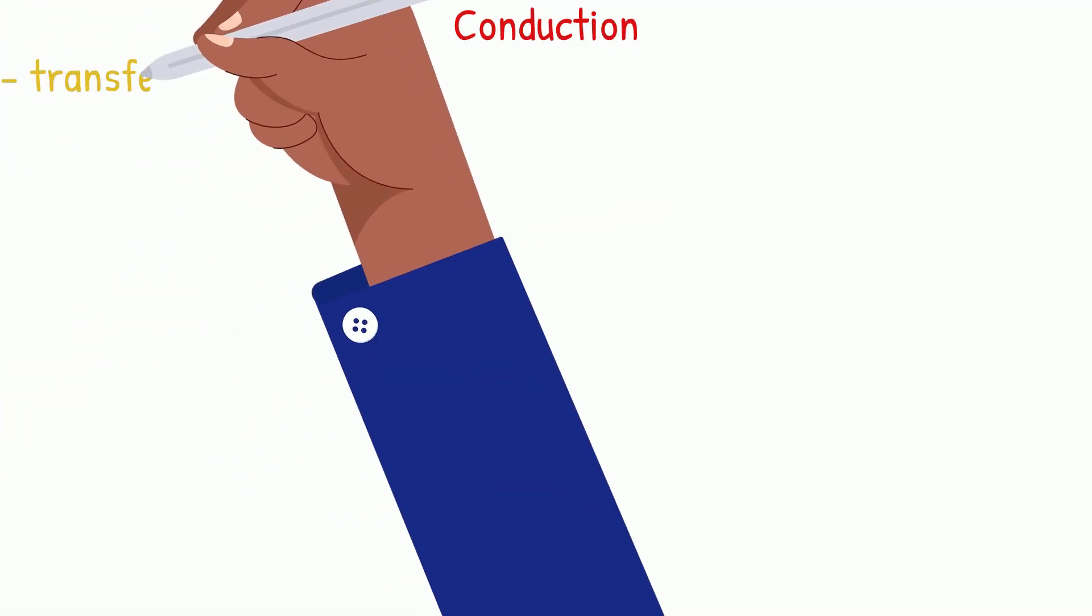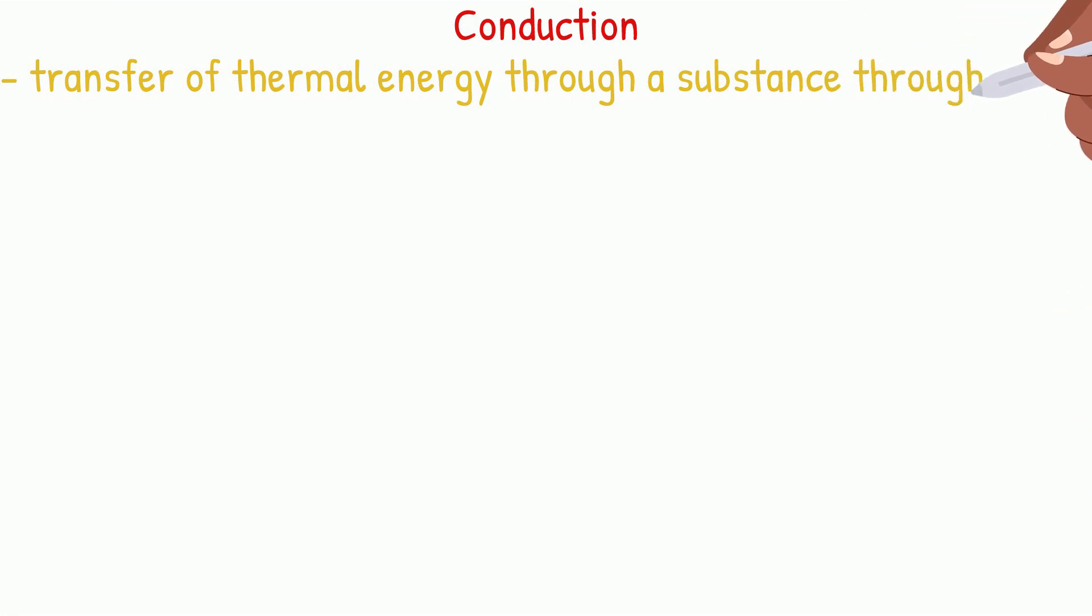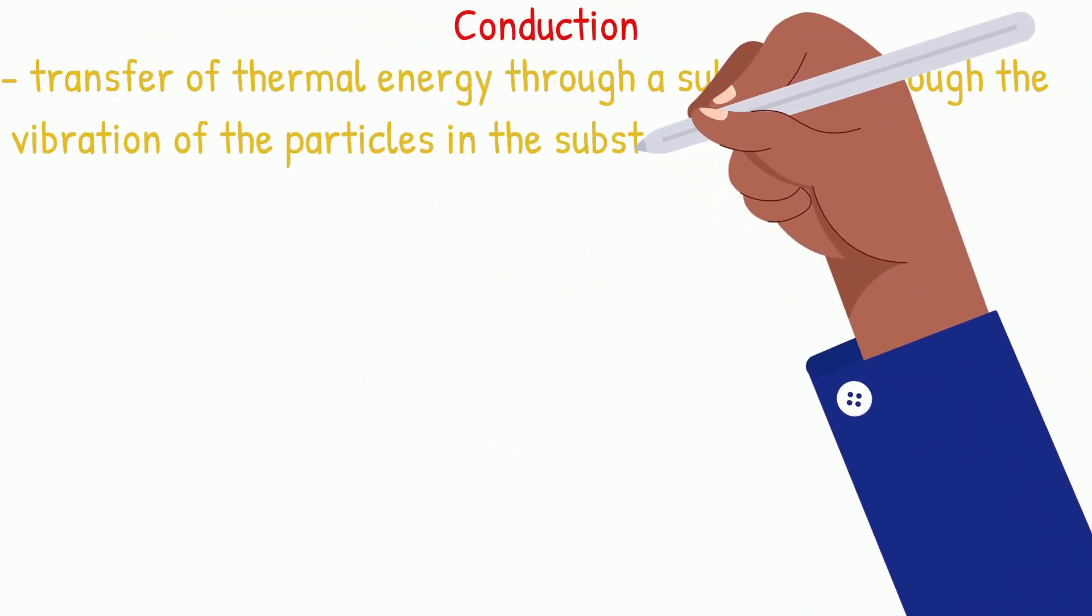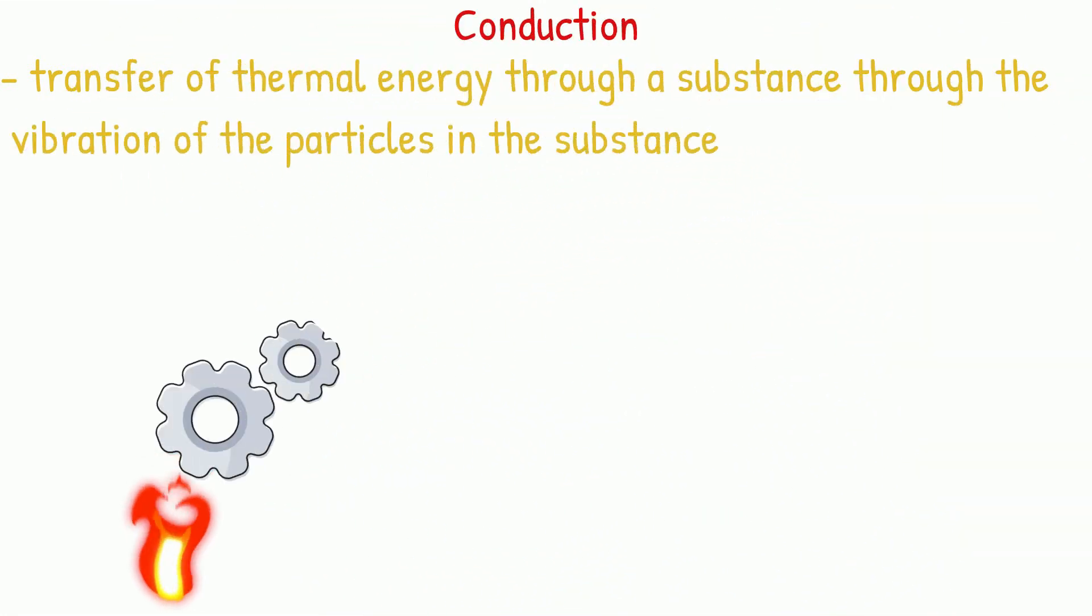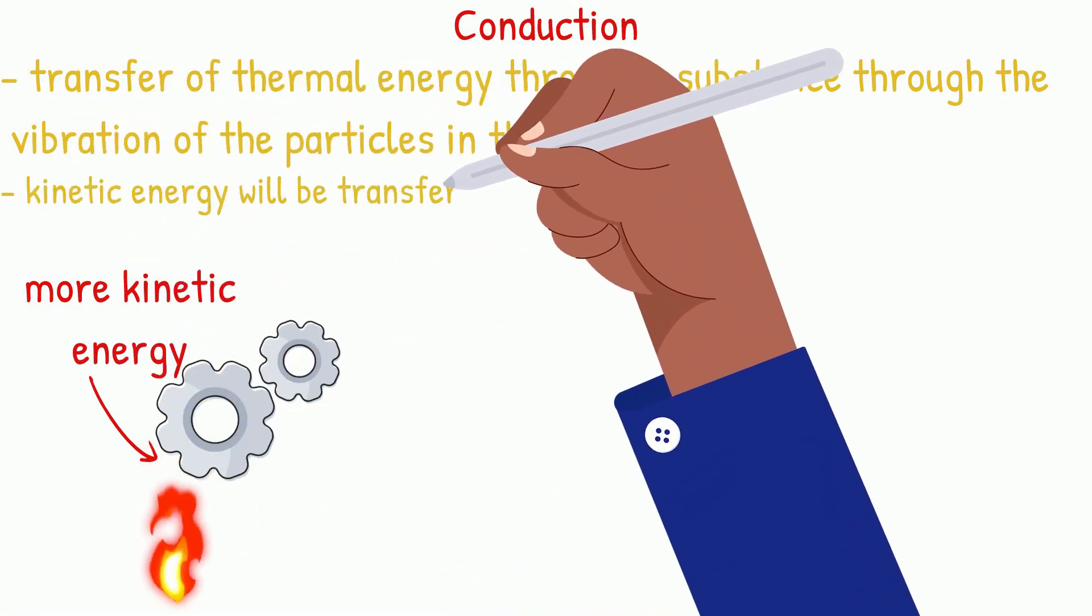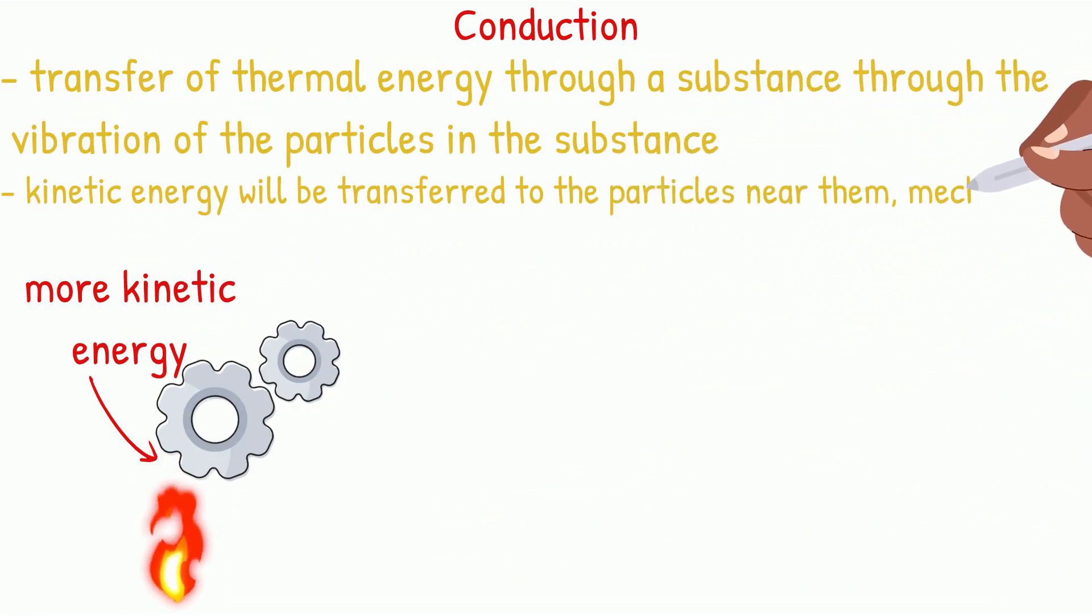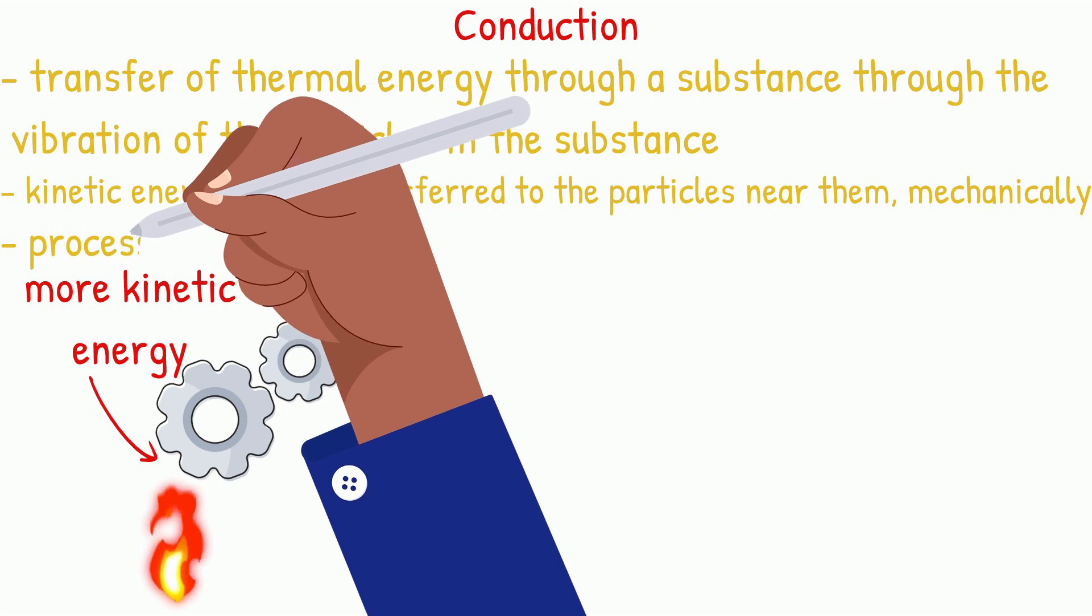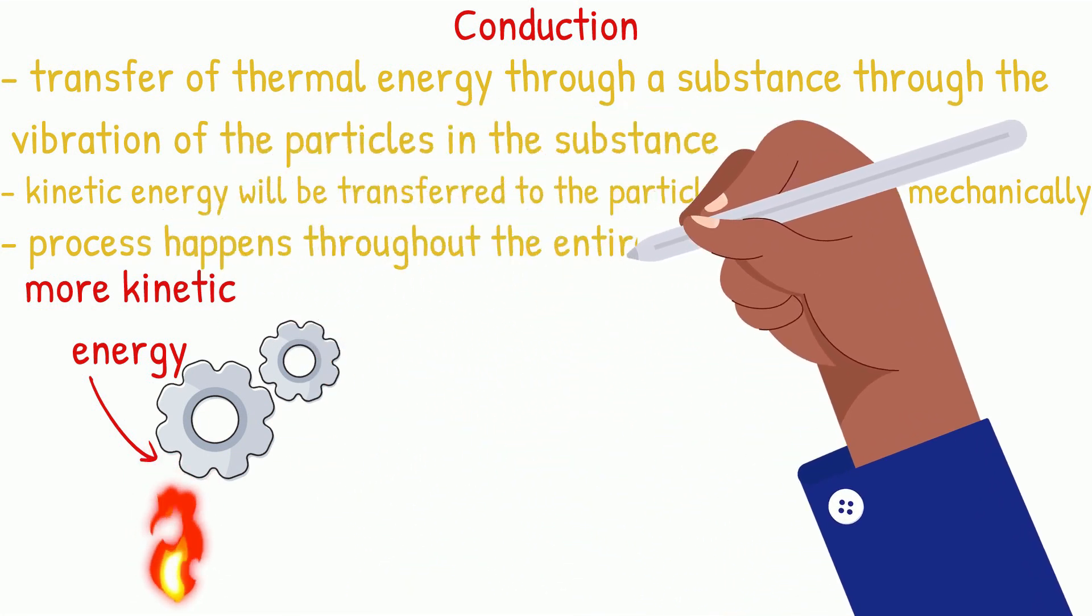Conduction is the transfer of thermal energy through a substance by the vibration of the atoms within the substance. To explain this more, if a metal is heated from one side, the particles in the heated hot side would have more kinetic energy. This kinetic energy would be transferred to the particles near them, mechanically, so these particles also gain kinetic energy and pass it on to the particles near them. This process happens throughout the entire substance.